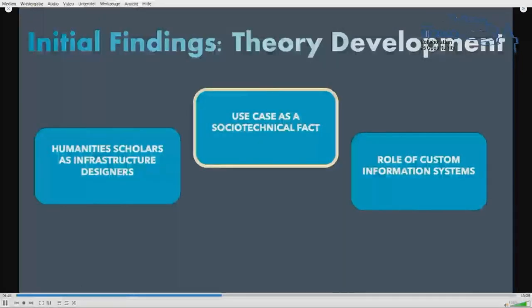Initial findings from these cases and the case studies identify several features which support preliminary theory development that reframes how the expert agency of humanities researchers is conceptualized. These features cluster to a set of interlinked concepts which we characterize as humanities researchers as infrastructure designers, the work of building custom information systems, and translating the use case as a socio-technical fact.